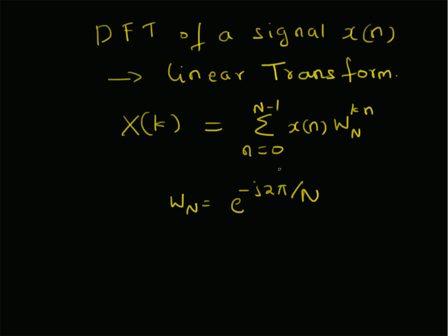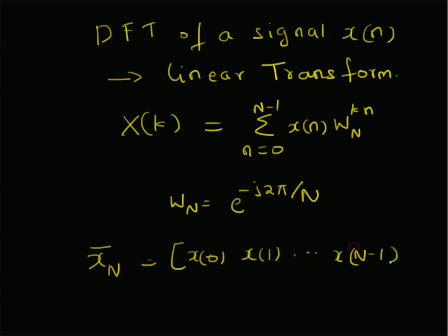We want to represent this as a linear transform, that is, a product of a matrix and a vector. As a first step, let us write the sequence X of n for n equal to 0 to N minus 1 as a vector x_N bar, equal to the values X of 0, X of 1, and so on up to X of N minus 1. The output sequence, that is the DFT sequence capital X_N bar, is given by X of 0, X of 1, up to X of N minus 1.